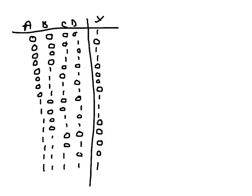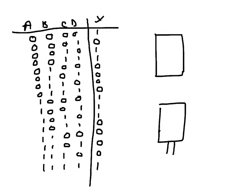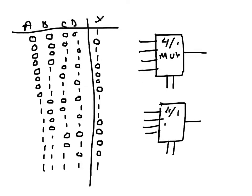I have to implement this truth table using two 4-by-1 multiplexers and I can use external additional gates as well. So I will draw the multiplexers first — four-over-one, so they will have two select pins and four inputs, and then just one output each. That's how a four-over-one works.